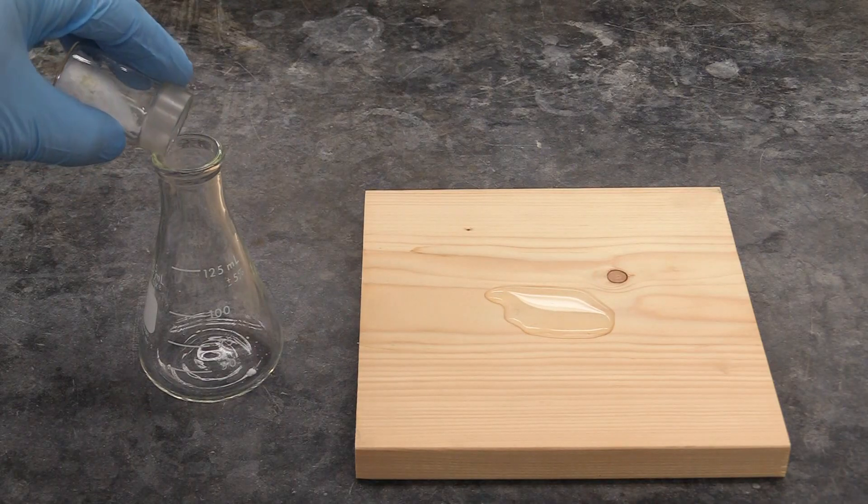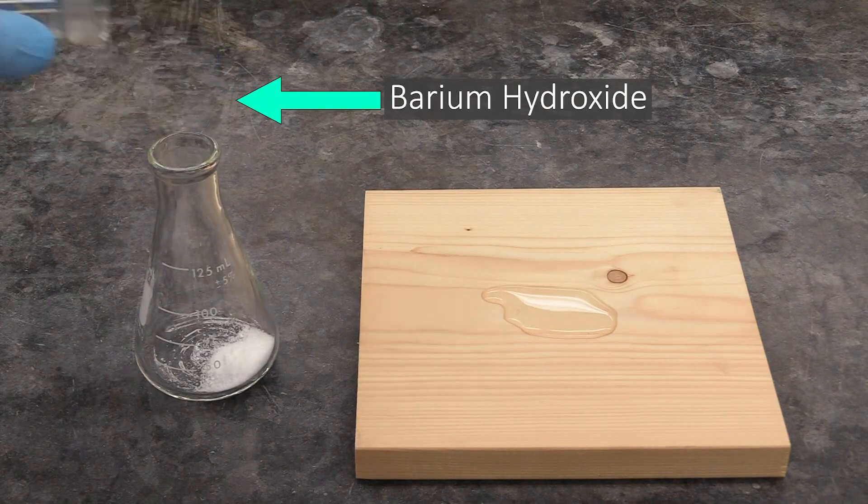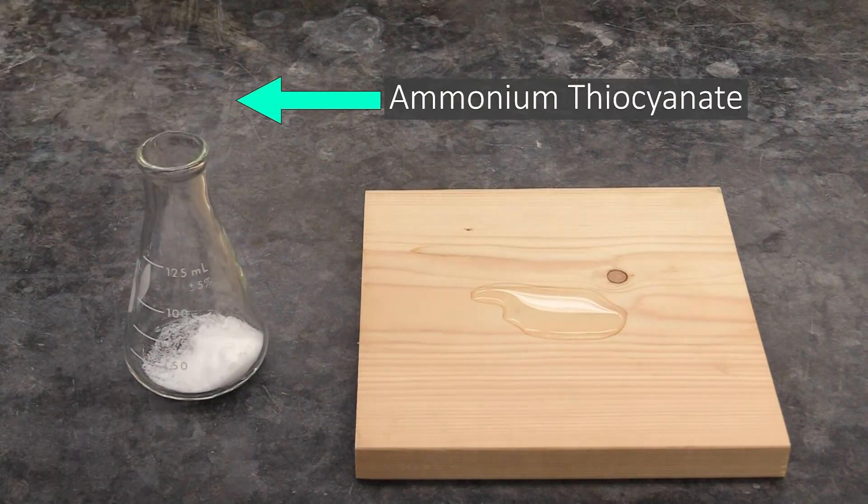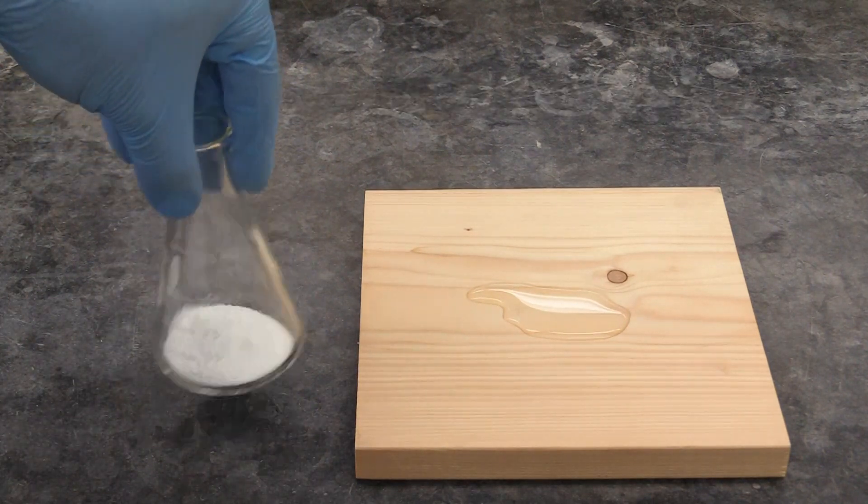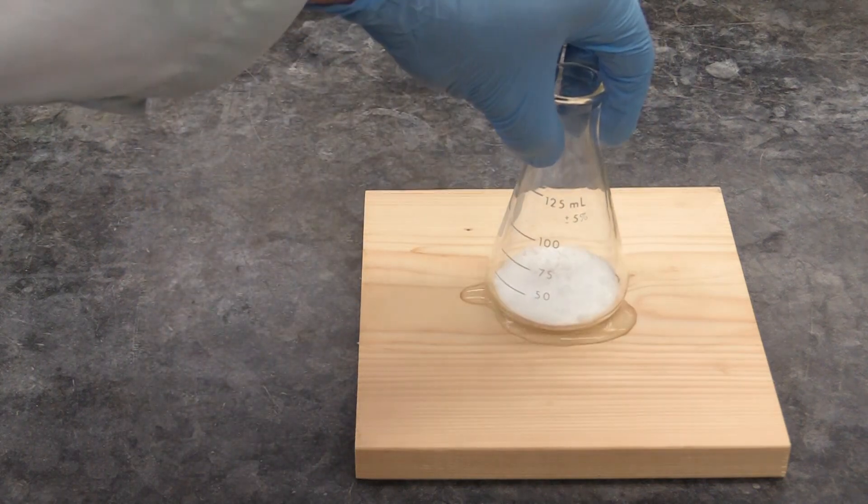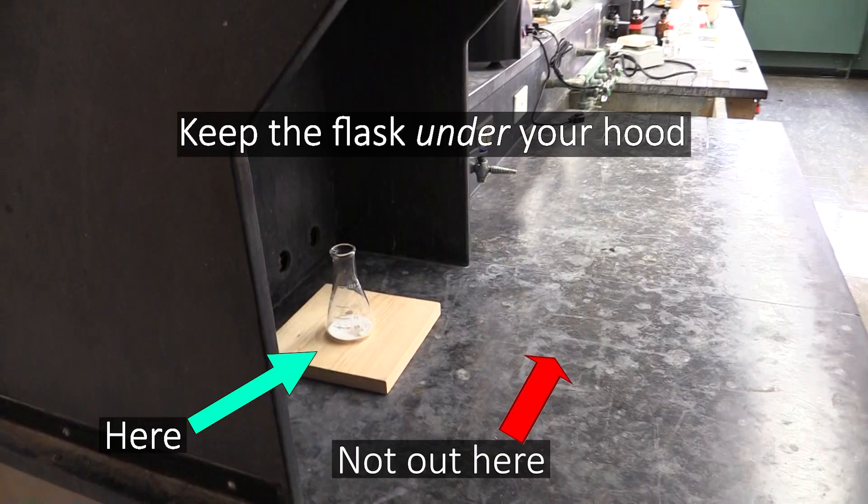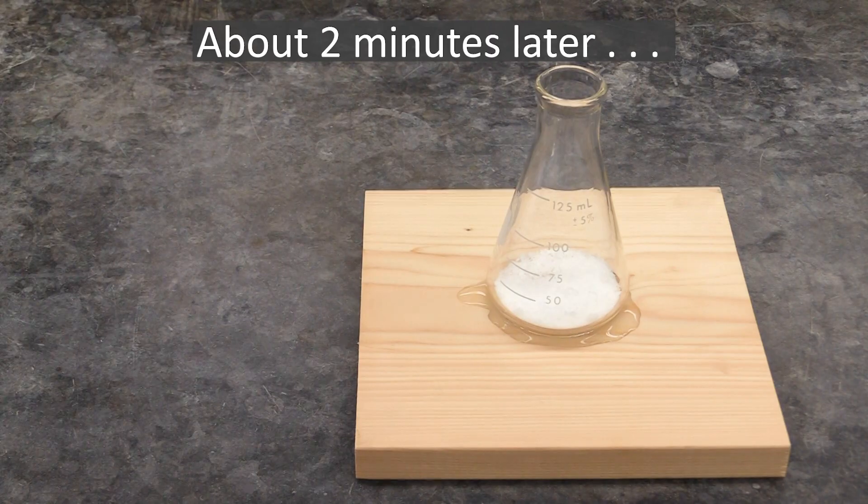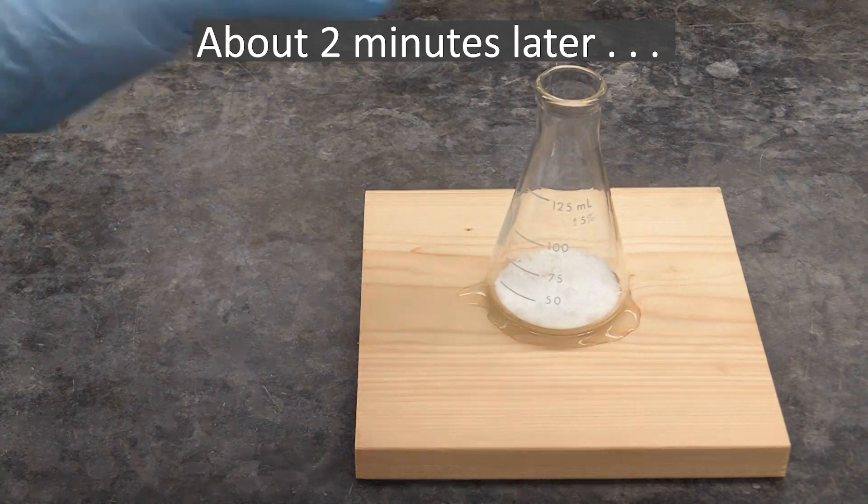For your first reaction, you'll add some barium hydroxide to a flask, then add some ammonium thiocyanate to that same flask, mix it up real good, and put it on a puddle of water on a wooden block. After a couple of minutes, you'll try to pick the flask up and watch what happens.